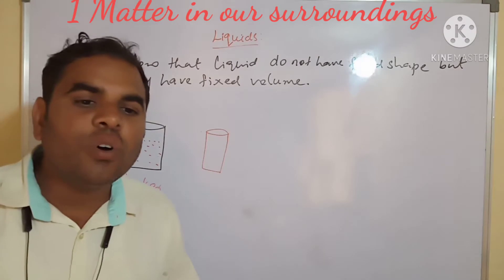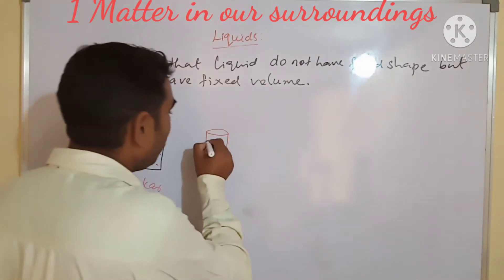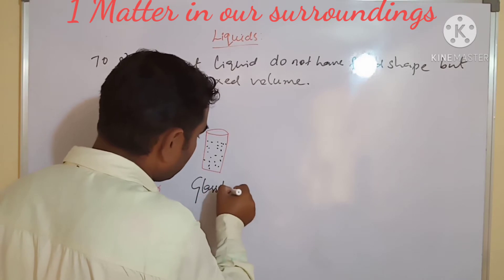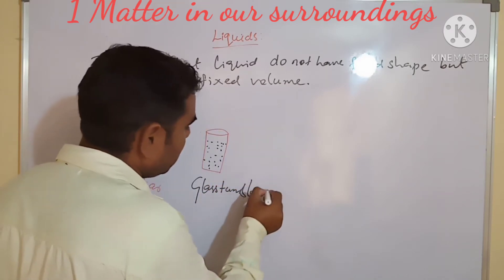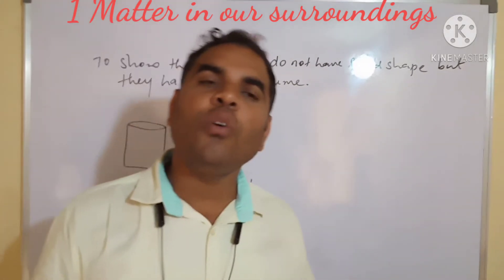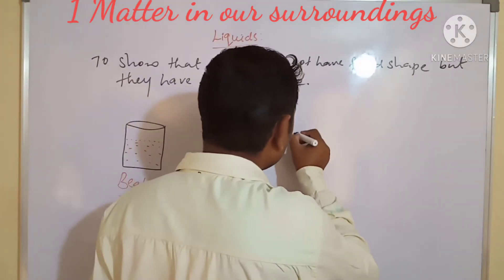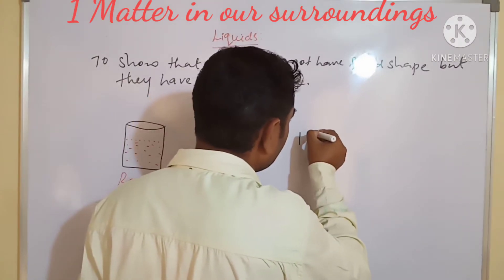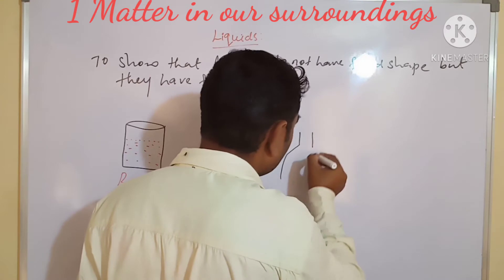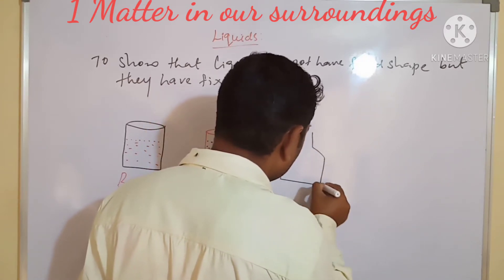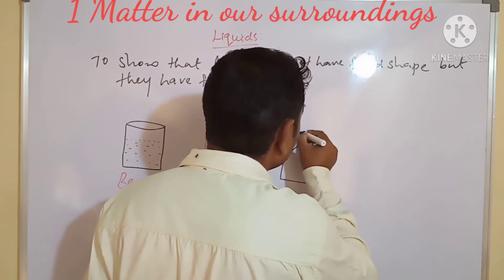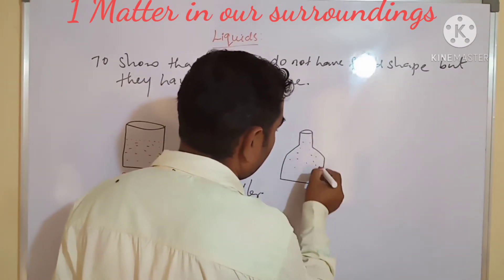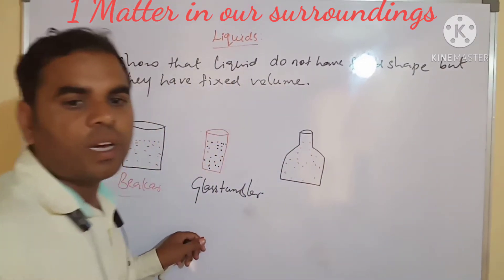See, here also we have a glass tumbler. We have to pour the water into the glass tumbler. See, this is a glass tumbler. Next, we have to see the conical flask. Taking the conical flask. See it will take their shape.